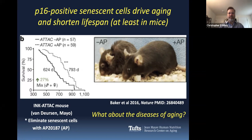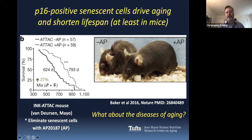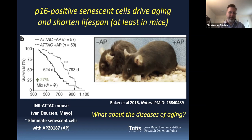It's not just that they lived longer. These are two age-matched mice — they're in fact siblings. One has all of its senescent cells, one does not. The one without senescent cells looks like a happy, healthy, normal mouse. The other mouse has lost some of its hair, it's hunched over, it's not healthy — it's what you would expect an old mouse to be.